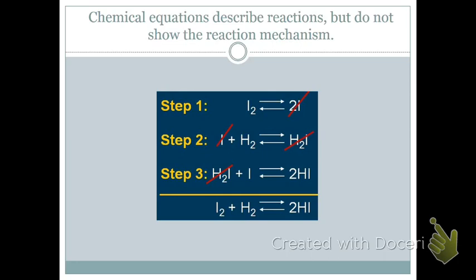Here is an example of a mechanism. The overall reaction is I₂ plus H₂ yields 2HI. But it doesn't just happen like that. Step one: take the iodine diatomic molecule and break it up into individual atoms. Those individual atoms then react with a hydrogen molecule to form H₂I. Then that H₂I reacts with another iodine atom produced in step one to form the 2HI. You cross out anything that appears on opposite sides of the arrow — so the two I atoms produced in step one are used up in steps two and three.